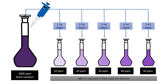To summarize: from 1000 ppm stock solution — diluting 1 ml to 100 ml with water gives 10 ppm; diluting 2 ml to 100 ml gives 20 ppm; diluting 3 ml to 100 ml gives 30 ppm; diluting 4 ml to 100 ml gives 40 ppm; and diluting 5 ml to 100 ml with water gives 50 ppm solution.